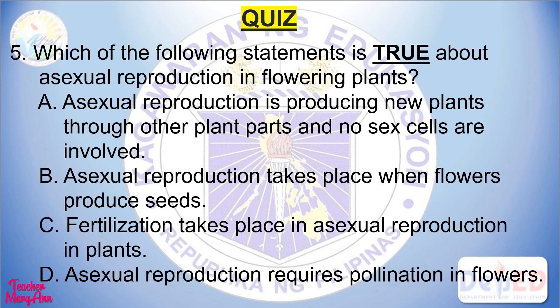Last number — number five: which of the following statements is true about asexual reproduction in flowering plants? A) asexual reproduction is producing new plants through other plant parts and no sex cells are involved, B) asexual reproduction takes place when flowers produce seeds, C) fertilization takes place in asexual reproduction in plants, D) asexual reproduction requires pollination in flowers.